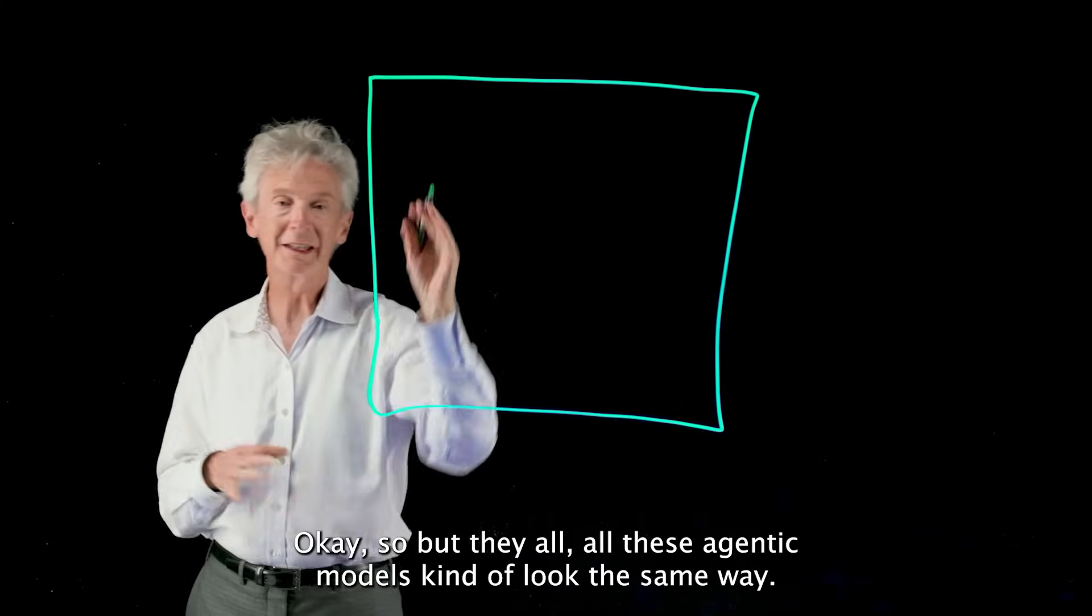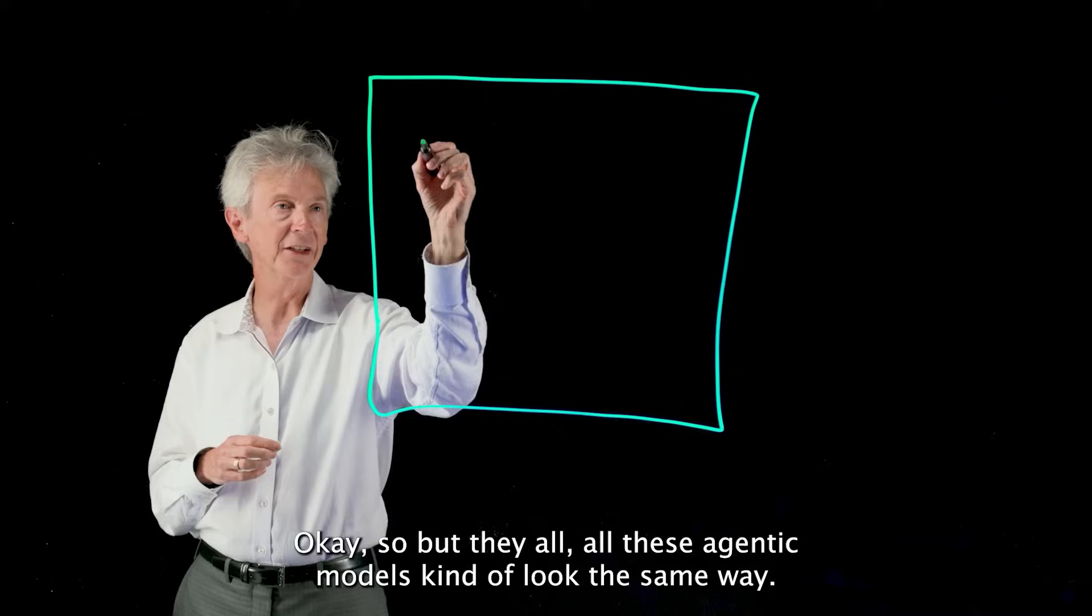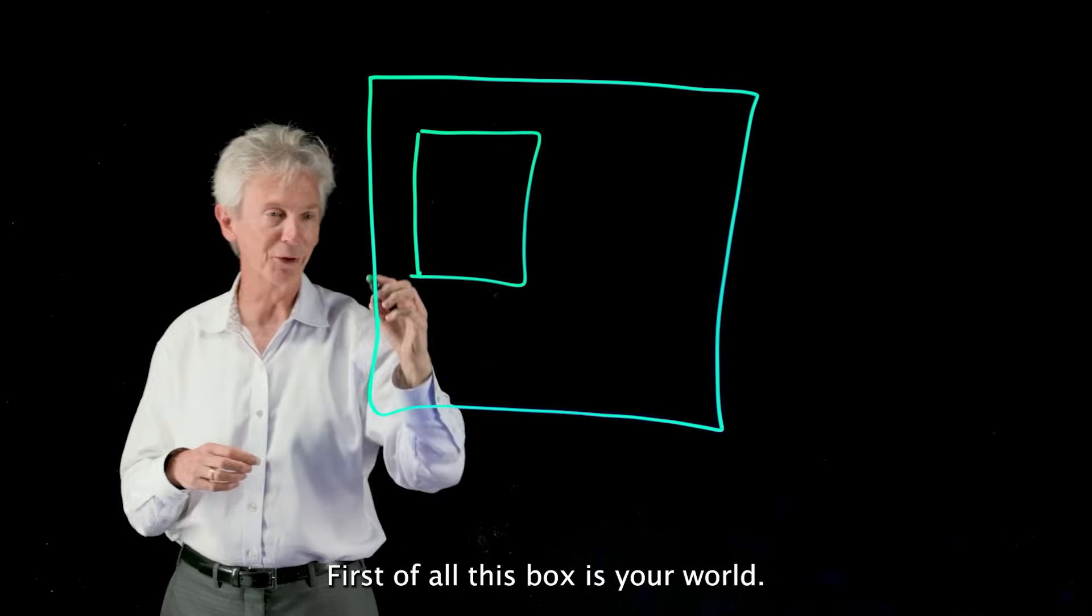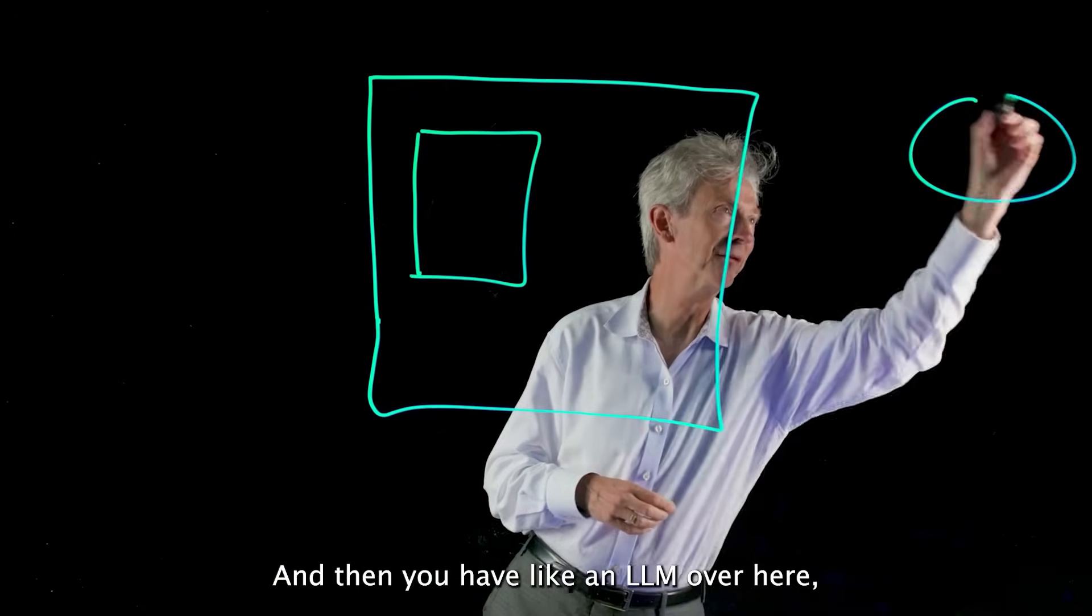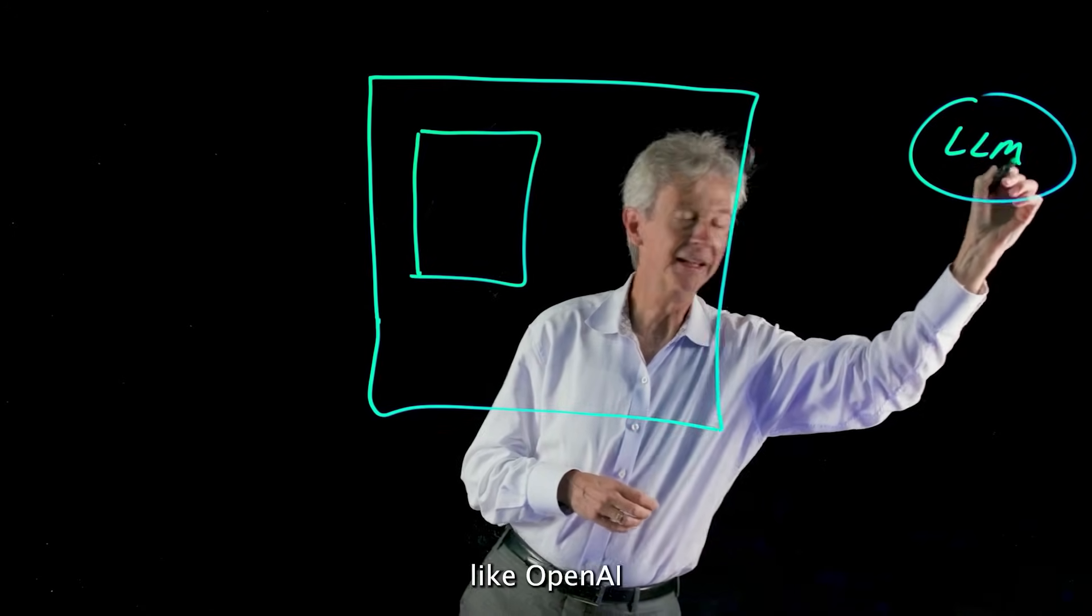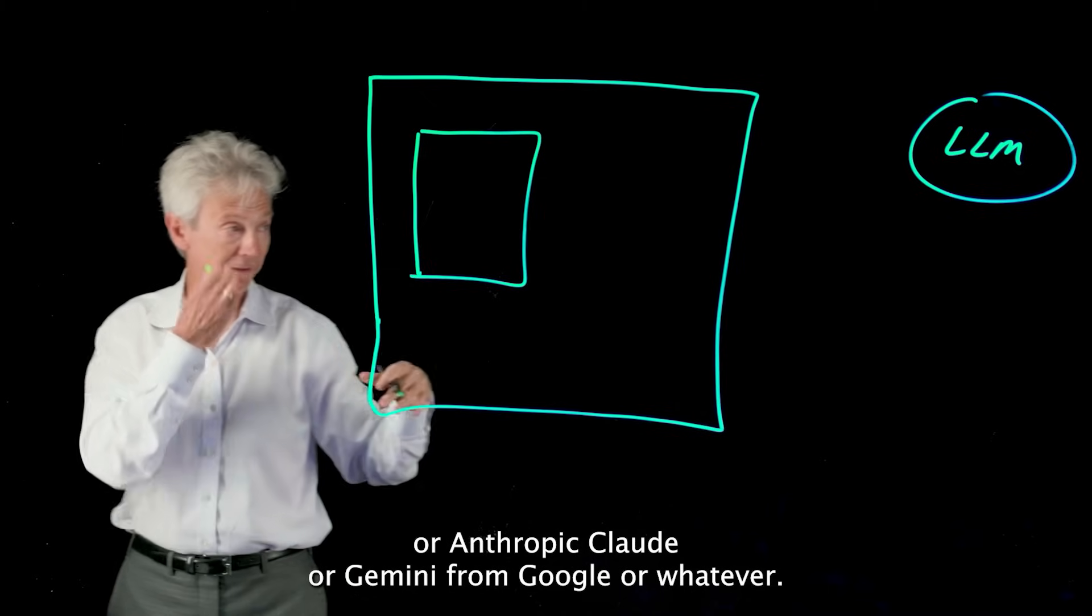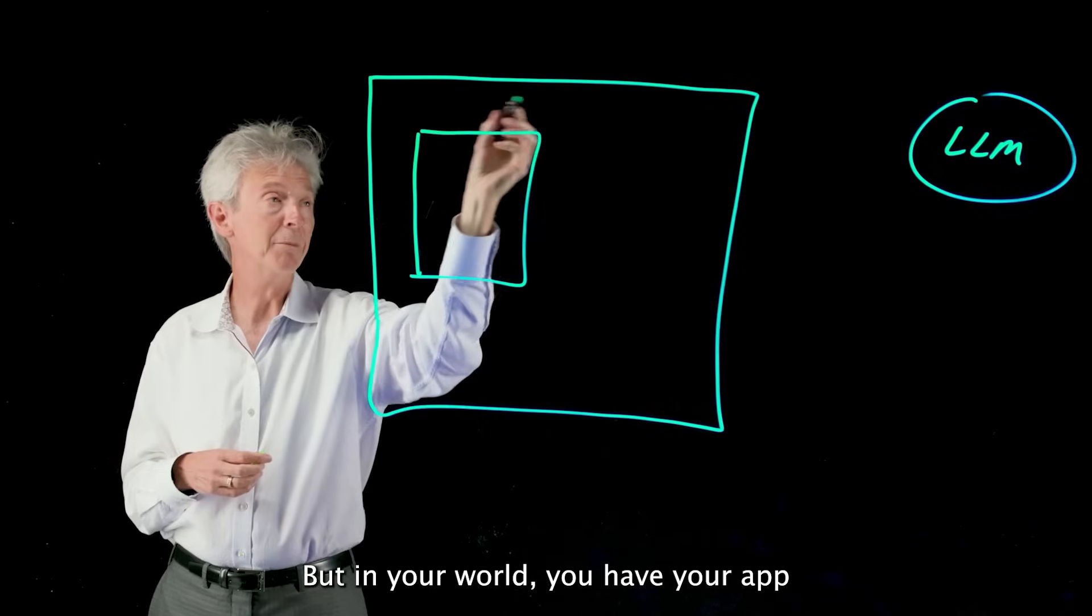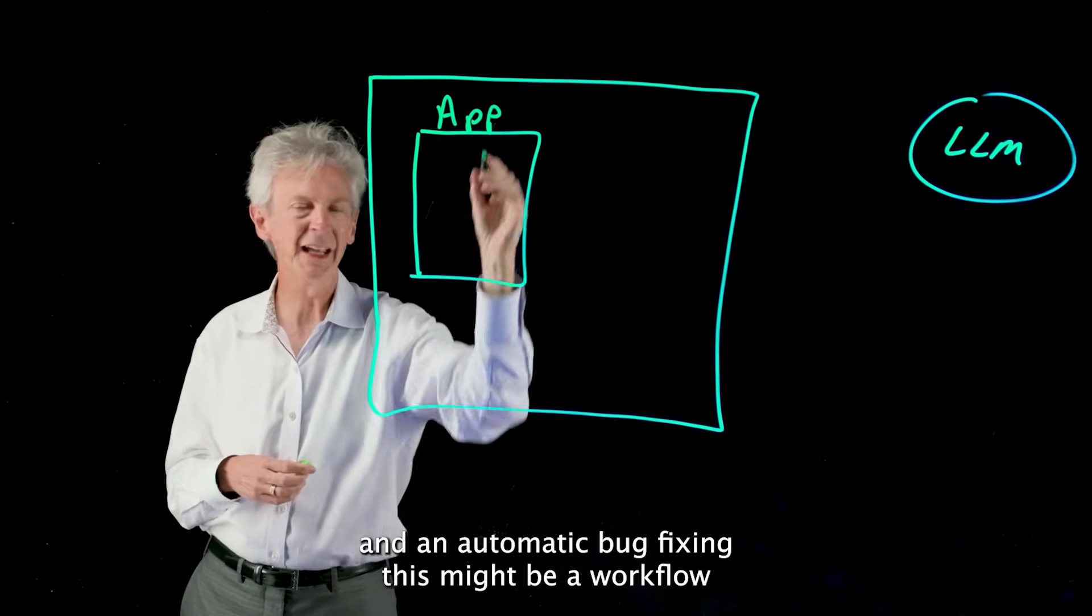Okay, so all these agentic models kind of look the same way. You have some kind of application first of all, this box is your world, and then you have an LLM over here like OpenAI or Anthropic's Claude or Gemini from Google or whatever.